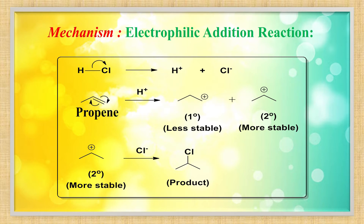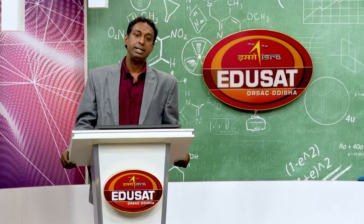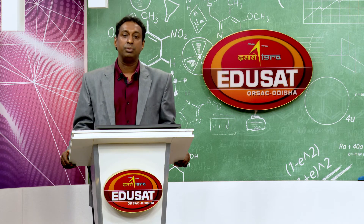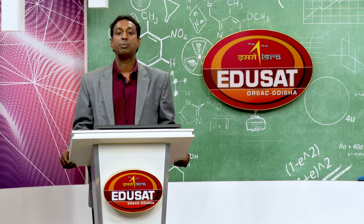This is an unsymmetrical alkene — propene: CH3-CH=CH2, with HCl added in the presence of CCl4. Markovnikov's rule says the negative part (Cl⁻) will attach to the carbon containing the least number of hydrogen atoms. The mechanism is electrophilic addition reaction.